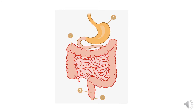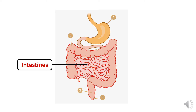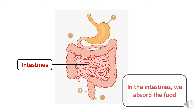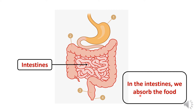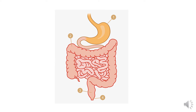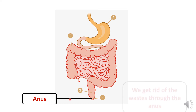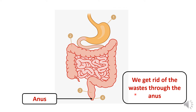What happens next? After the stomach, we have the intestines. These are the small intestines and these are the large intestines. In the intestines, we absorb the food we need so our body can get its energy. In the end, we will have some wastes, like the factory. How do we get rid of these wastes? Through the anus. We get rid of the wastes through the anus.